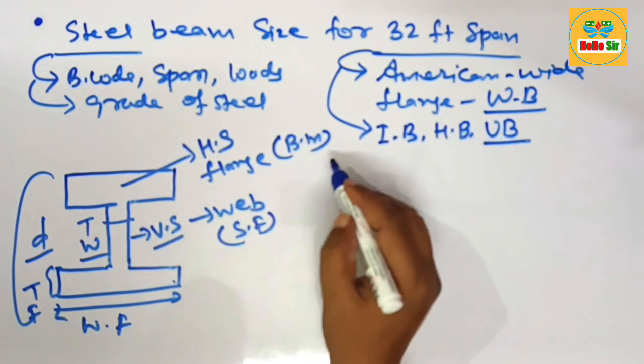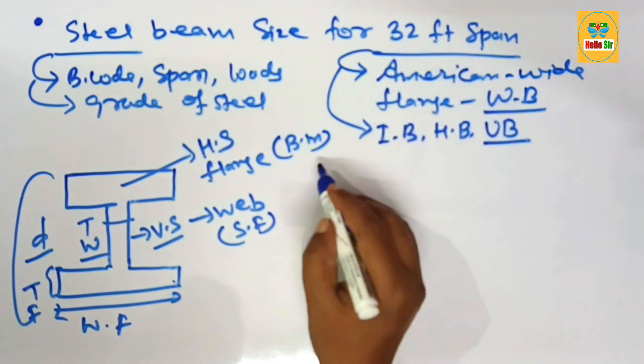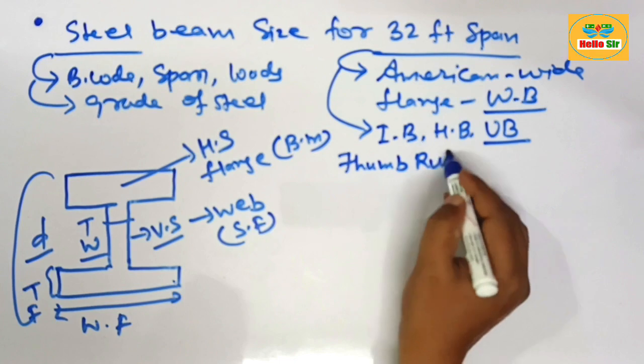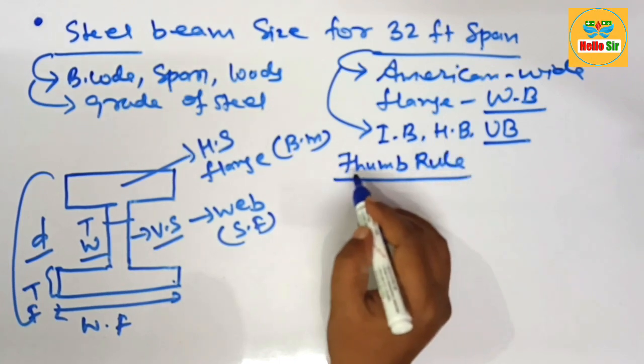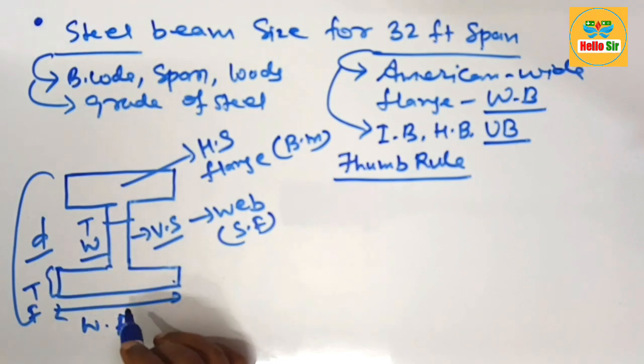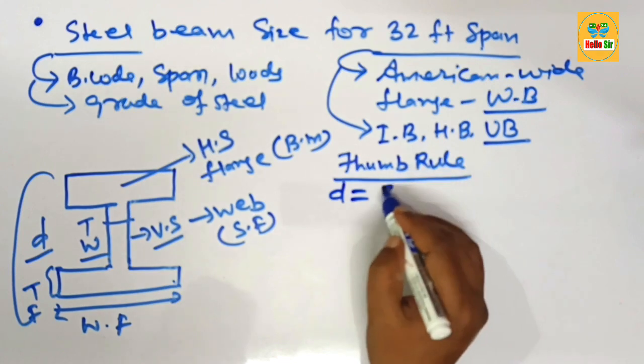Here we find out steel beam size for 32 foot span as per thumb rule. What is the thumb rule for sizing of steel beam? The depth of steel beam should be your span length in inches divided by 24. This is thumb rule to calculate the depth of the steel beam.